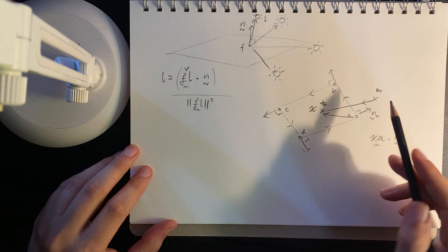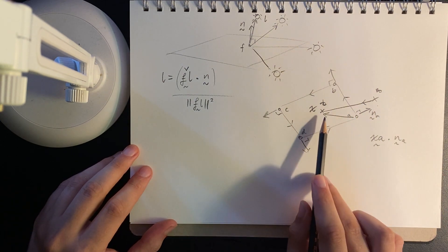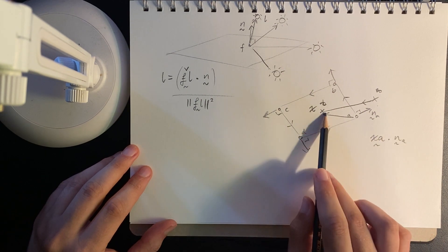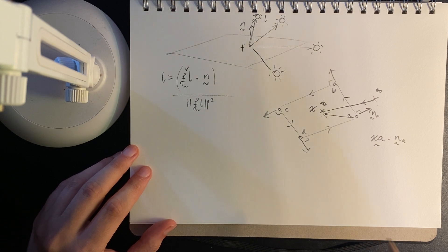If we look at XA dot the normal for point A, if that is positive, then X is out here, it's exterior to that line. If it's negative, then we're on the back face, and we have passed through that line into the shape.